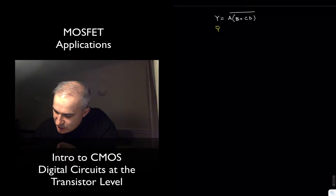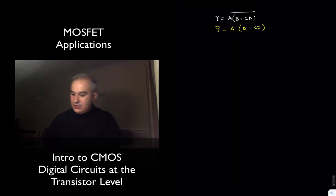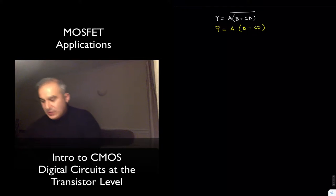First of all, this is going to be low when A and B or C, D is, these ones are high.